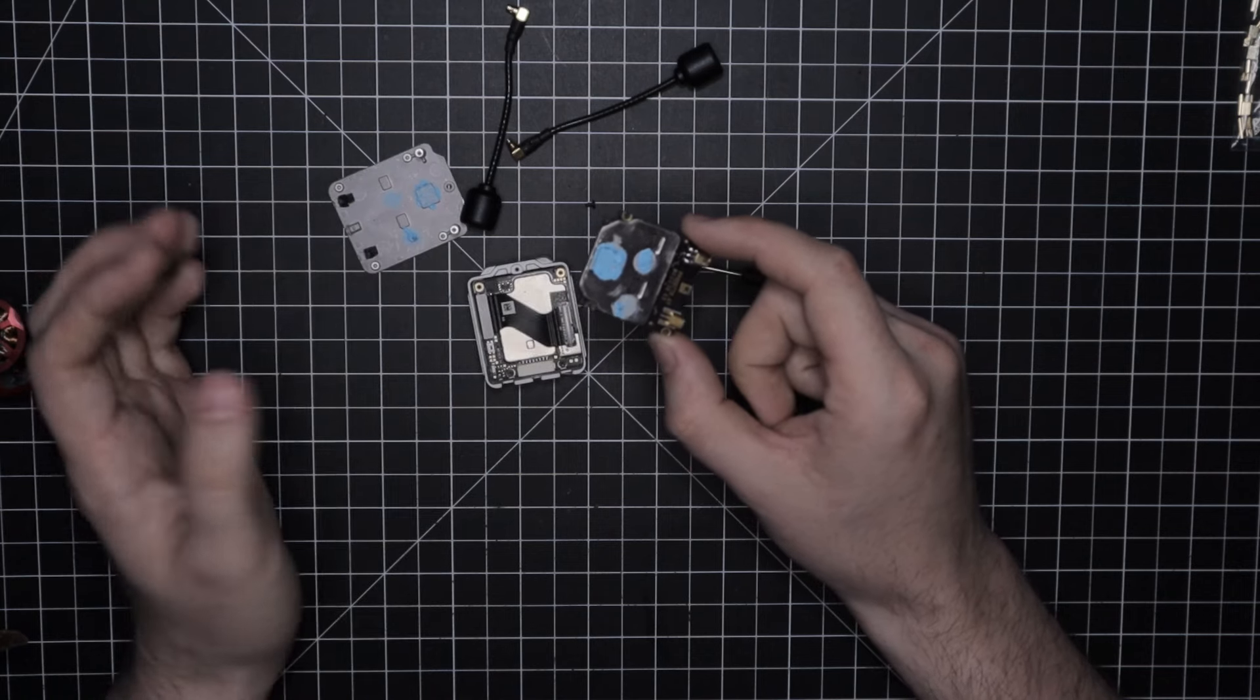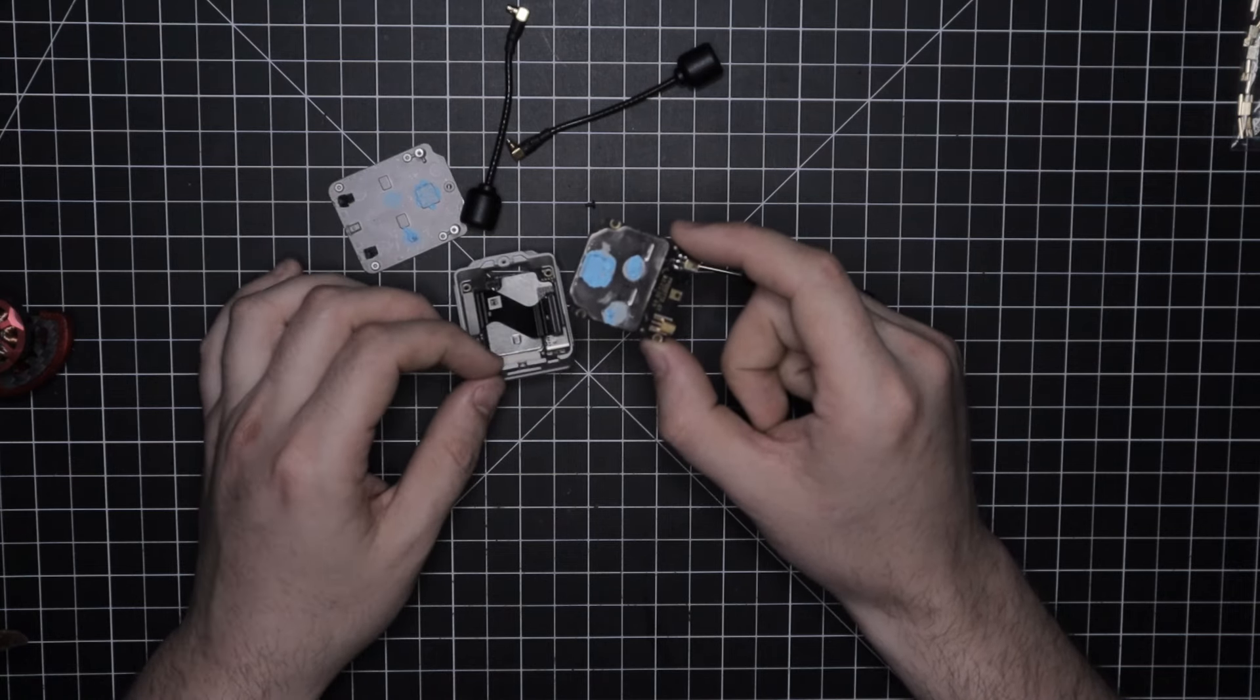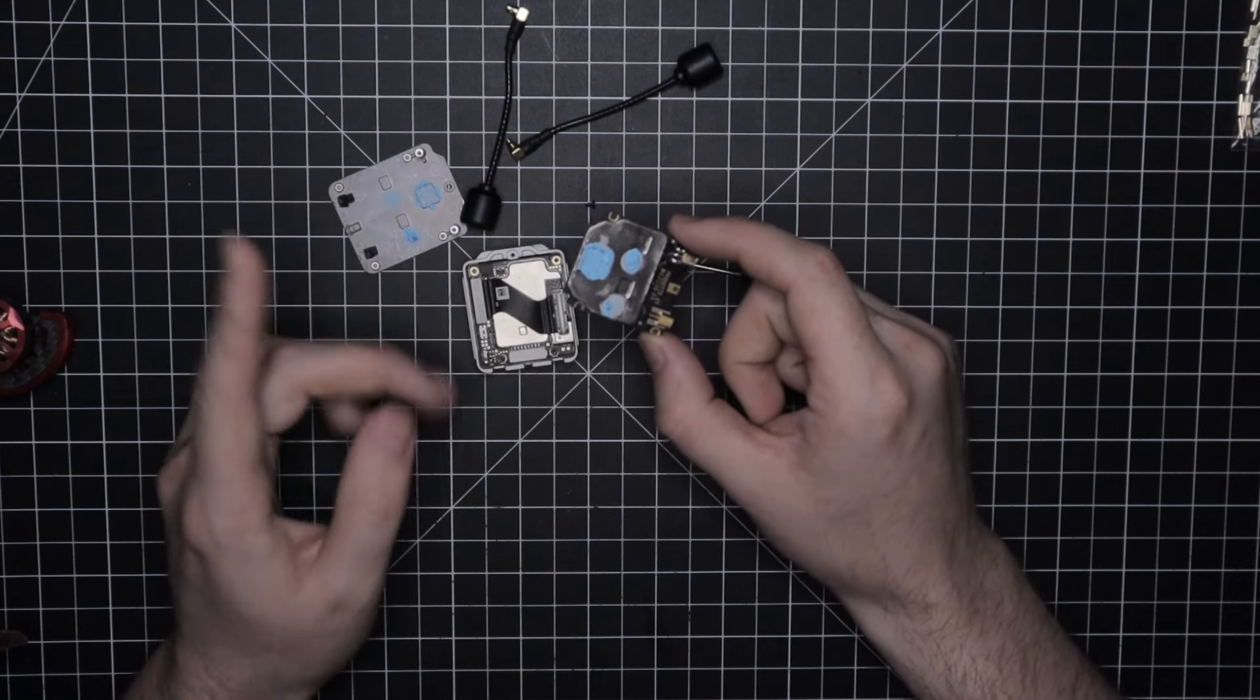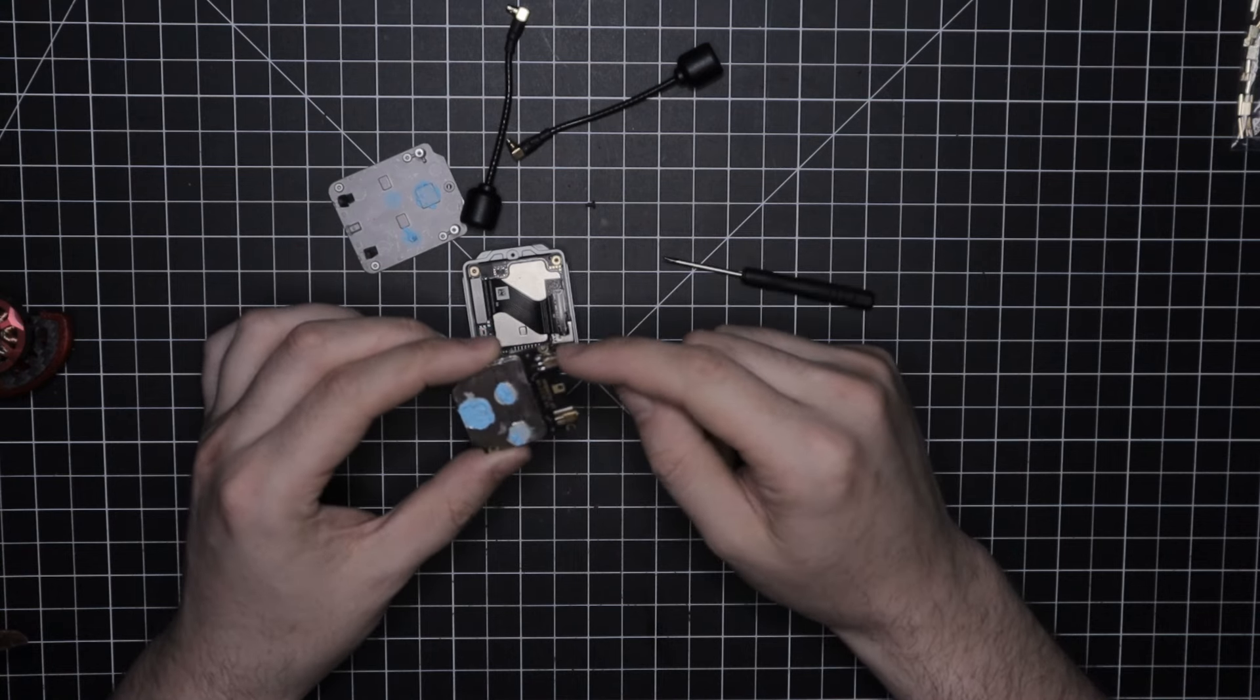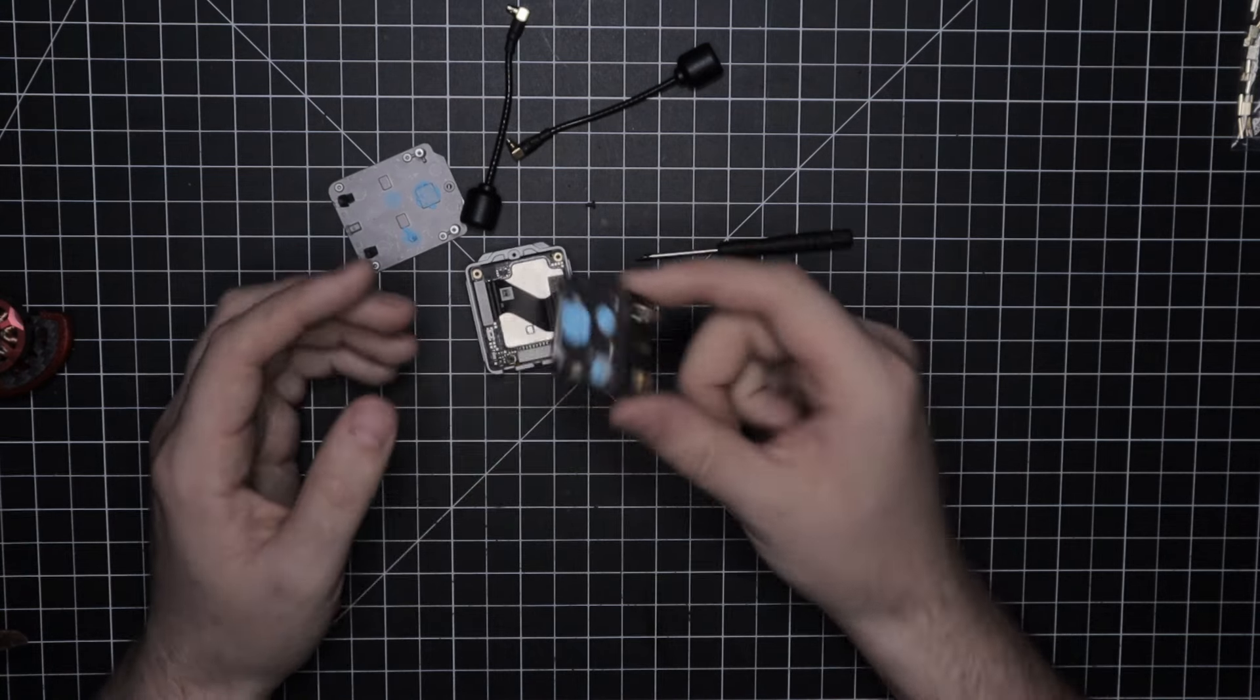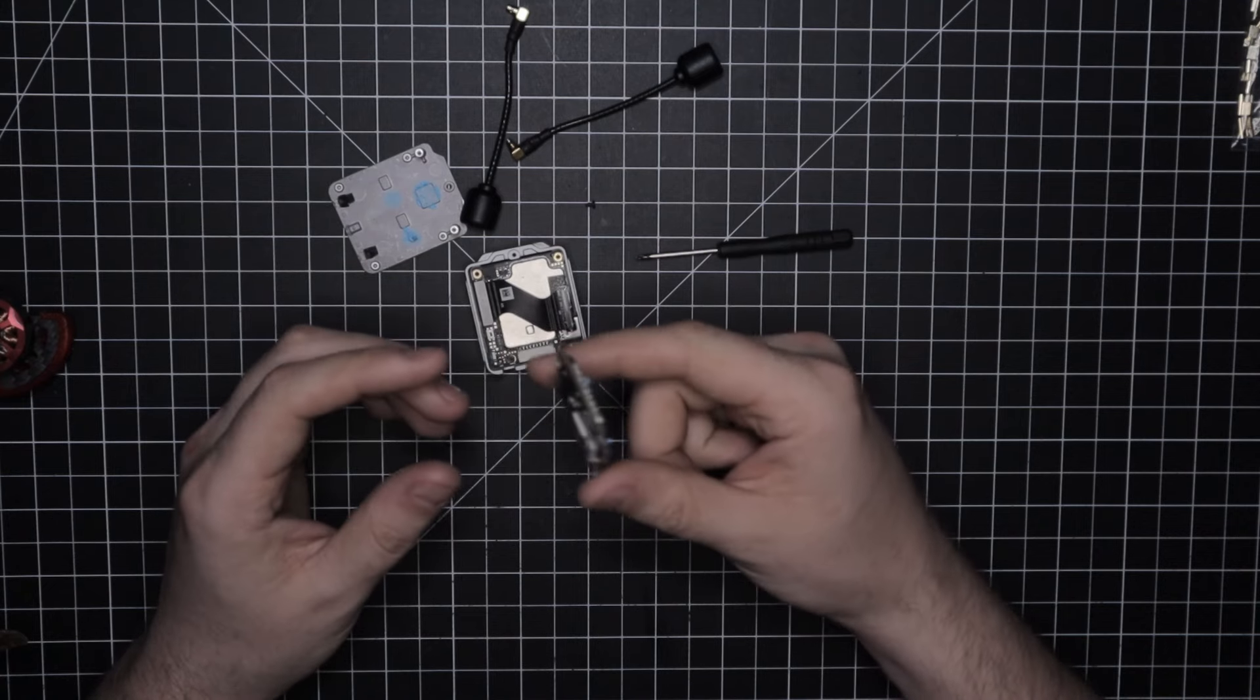I'm not sure if the O3 is the same way where one antenna allows you to bind to the goggles or not. But yeah, hopefully this was useful for you guys.